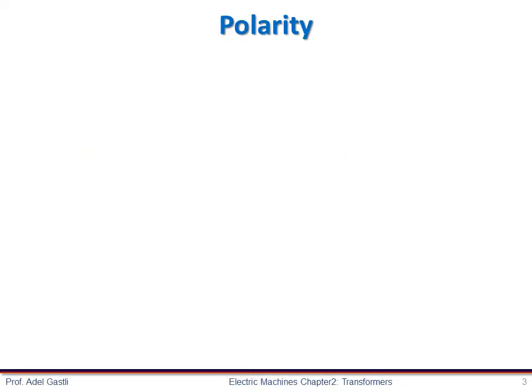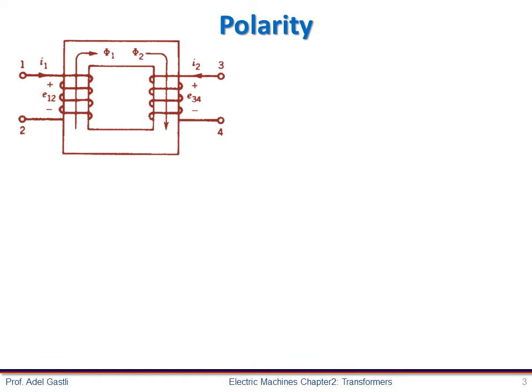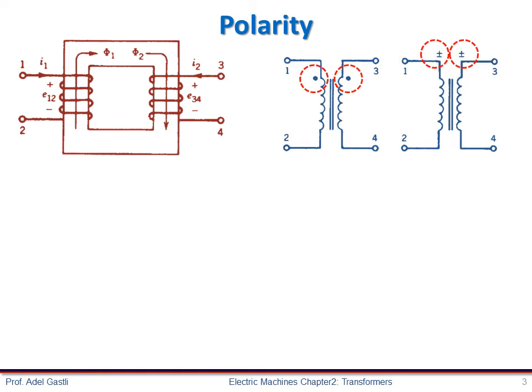Another important feature or characteristic of the transformer is the polarity of its windings. The polarity of transformer windings designates the relative instantaneous current directions of winding leads. The polarity of windings is usually designated or marked with either dots or plus/minus signs, as shown in this figure. These markings may be found on transformer cases, beside terminals, winding leads, main plates, or schematic diagrams.